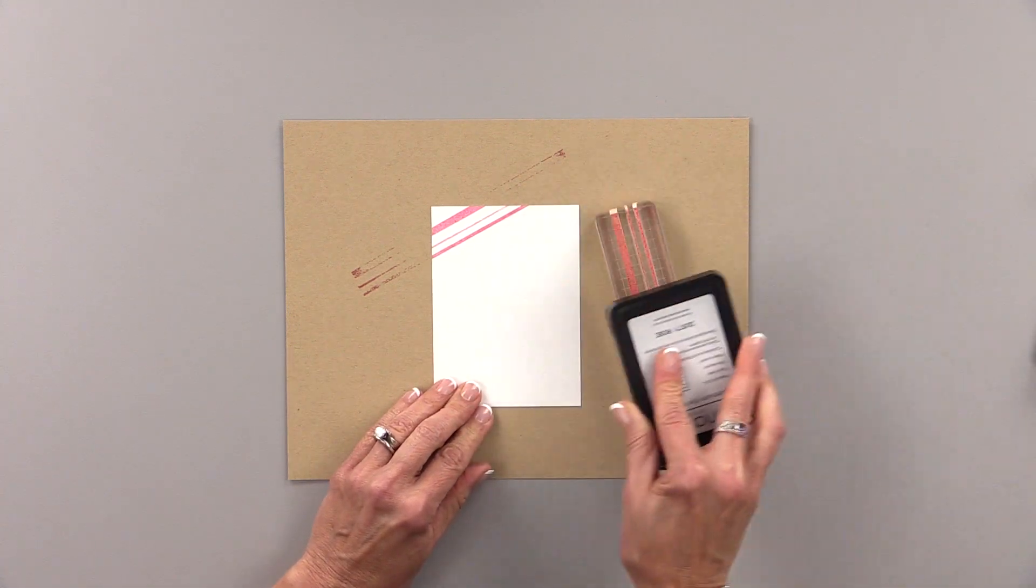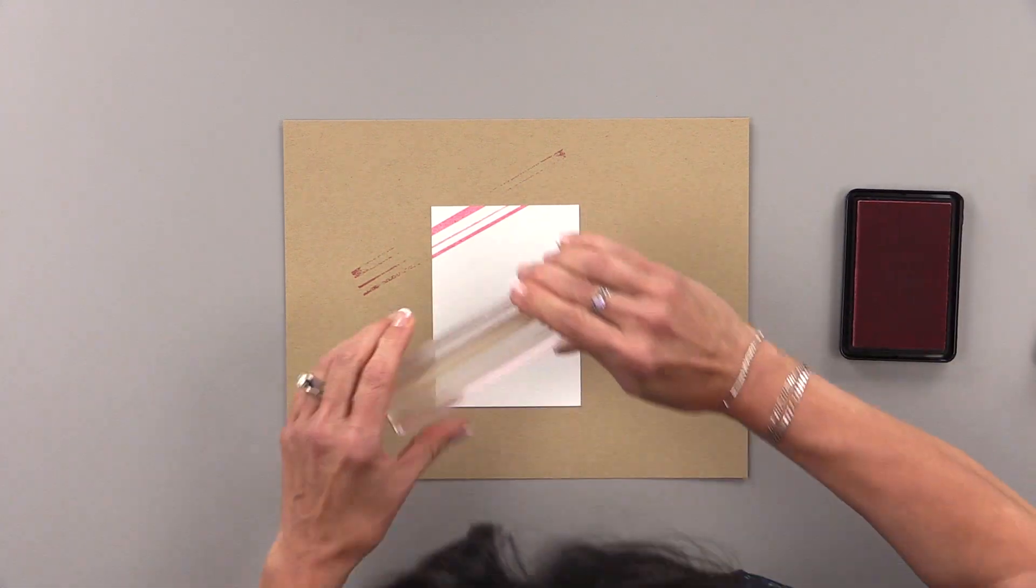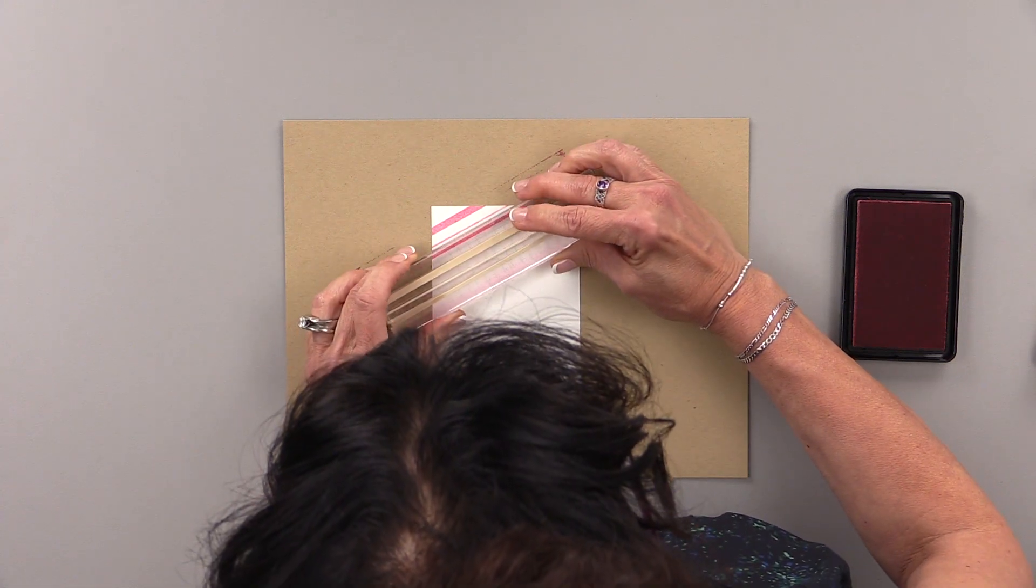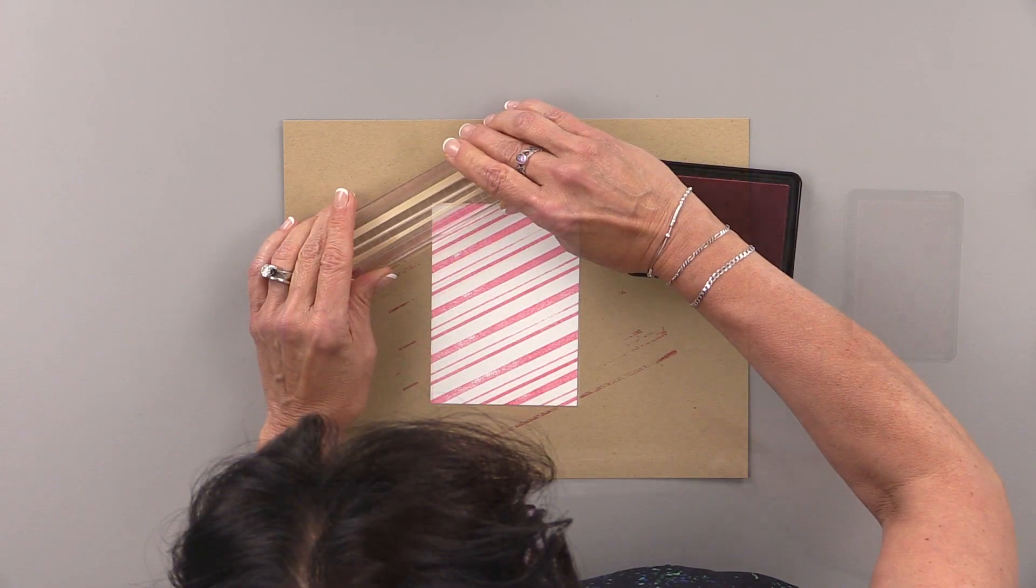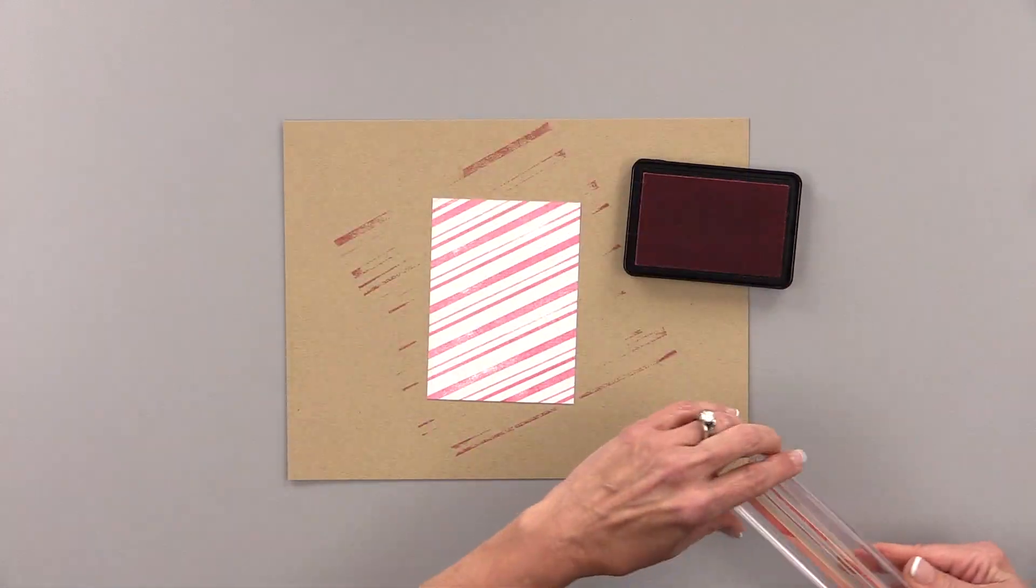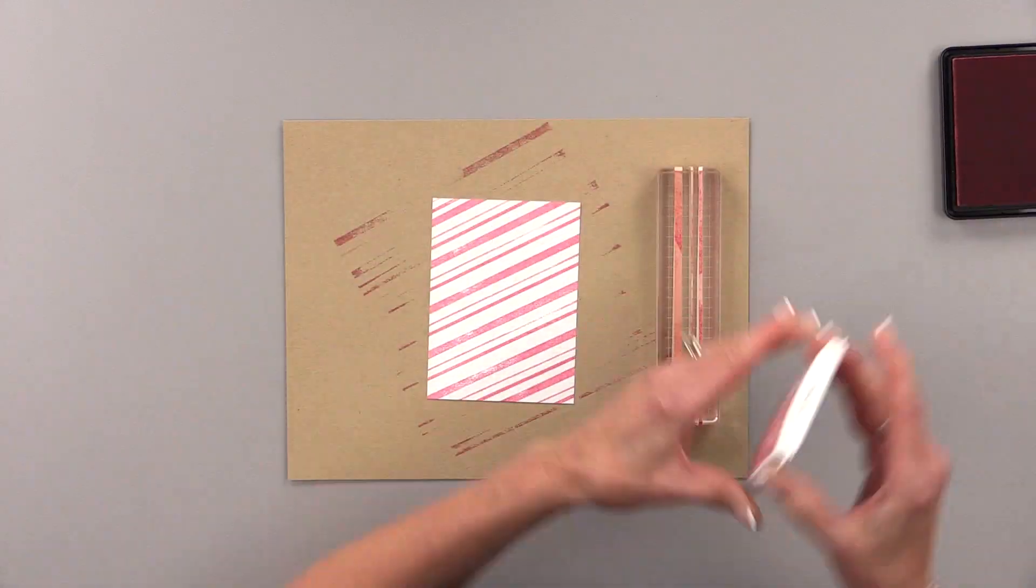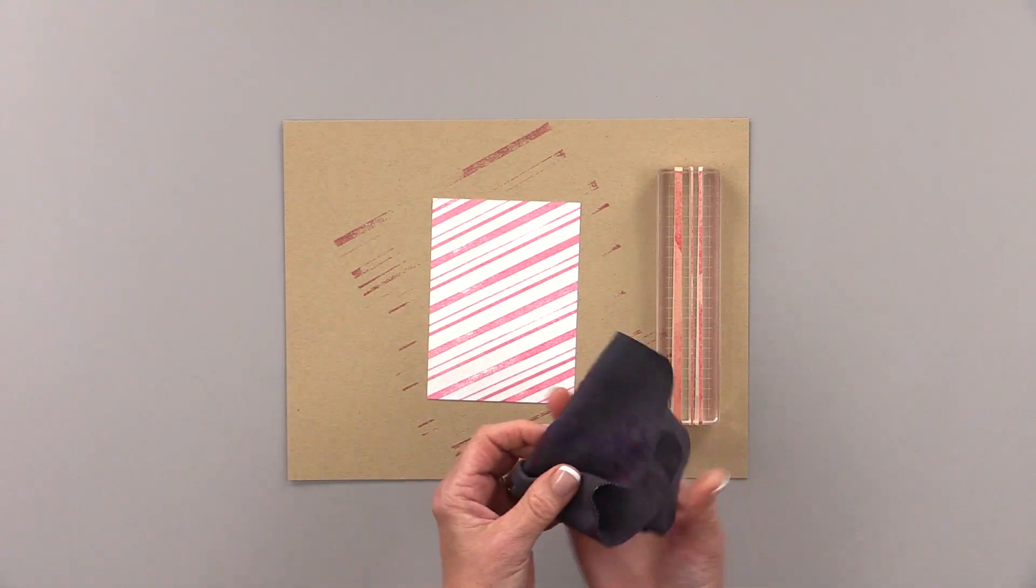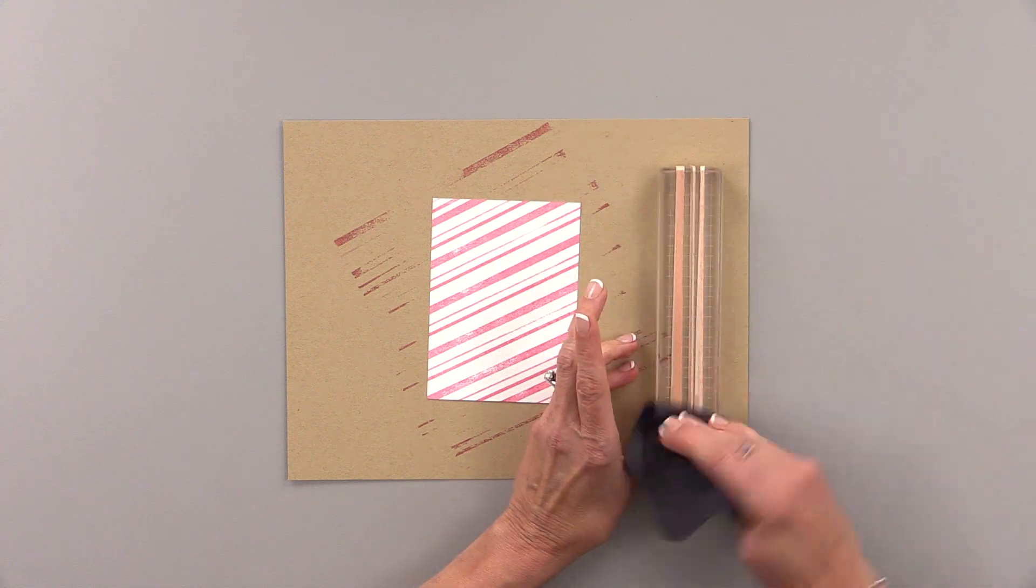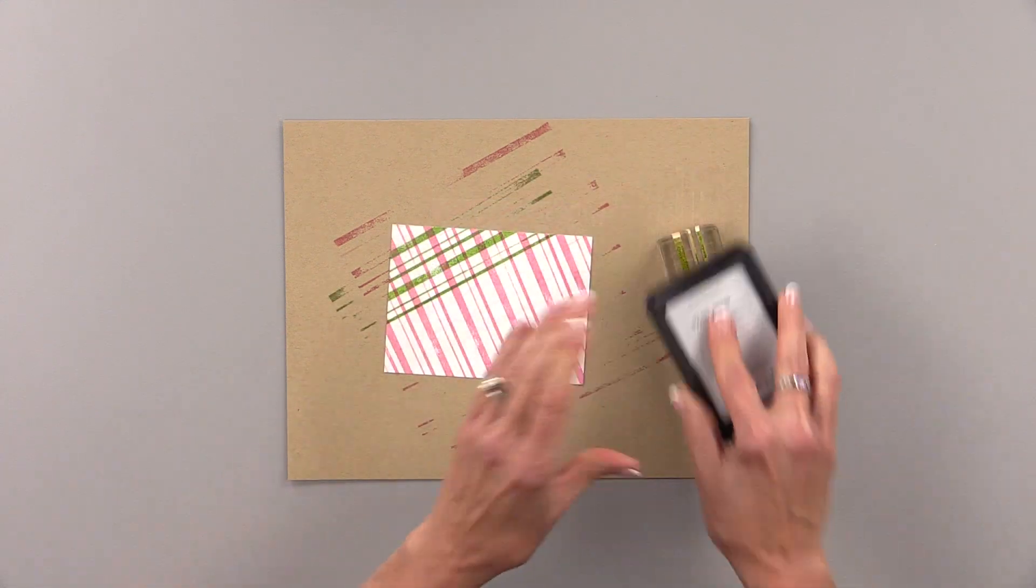You might notice that this technique looks a little more distressed than maybe a rubber stamp or a background stamp would look. That's because rubber bands weren't designed to be rubber stamps. However, they really work well. And you can clean them with the tidy towel in between colors.